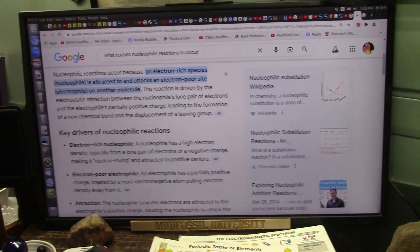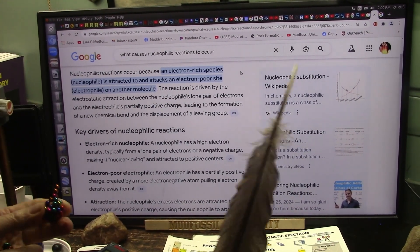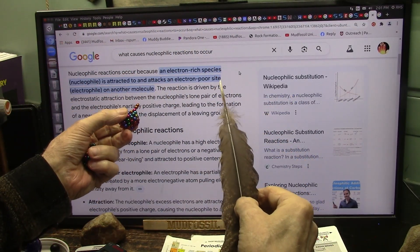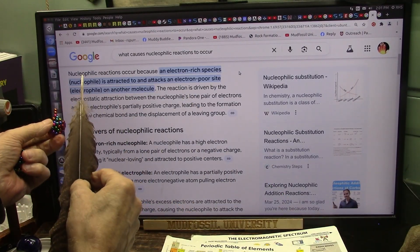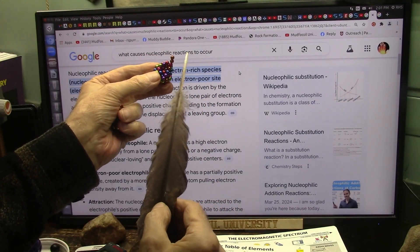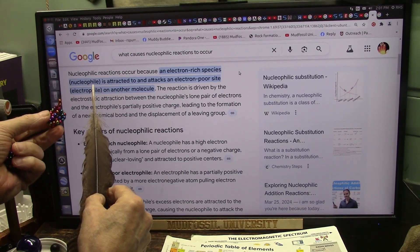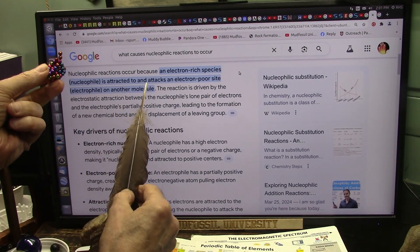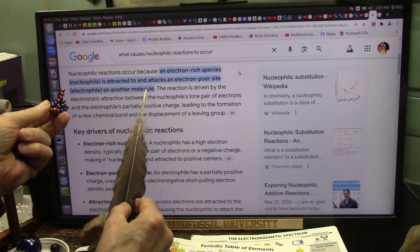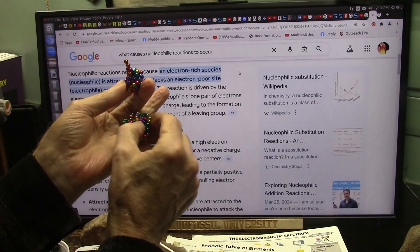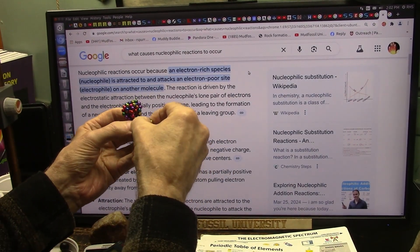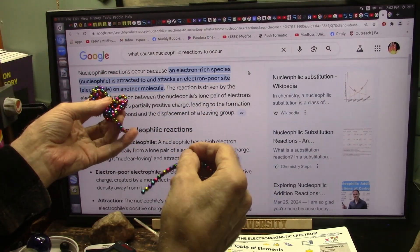Hold on. All right, this is confusing. But don't worry about it. What happens is, some new molecule comes in there and takes over that site and pushes the old guy out. Nucleophilic reactions occur because an electron rich site species, like this, has extra electrons, which is the nucleophile. It's a killer of the nucleus, is attracted to and attacks an electron poor site, which is the electrophile, on another molecule. So it attacks it, like this. Well, then what happens? What's going to happen is it's going to drive a chunk off and it's going to make a new type of molecule.